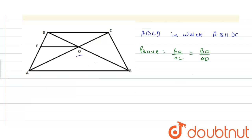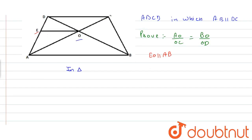In this, we also have EO parallel to AB meeting AD at E. So in triangle ADC, EO is parallel to DC.